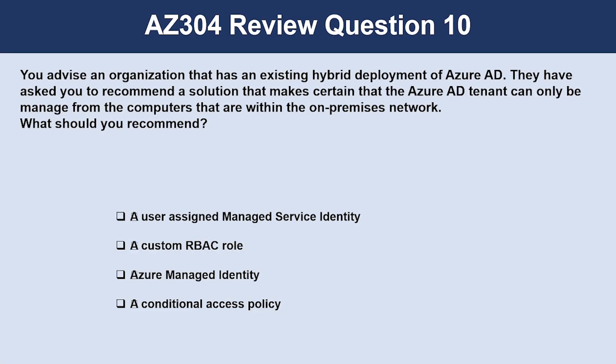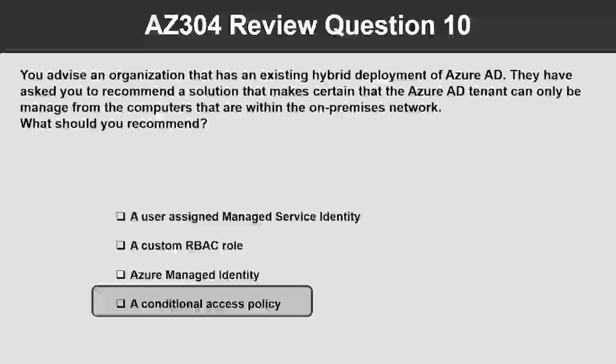Question number ten. You advise an organization that has an existing hybrid deployment of Azure AD. They have asked you to recommend a solution that ensures the Azure AD tenant can only be managed from computers within the on-premises network. The correct answer is a conditional access policy. You can add the on-premises IP to the trusted IP section in a conditional access policy and set the Azure management cloud app.